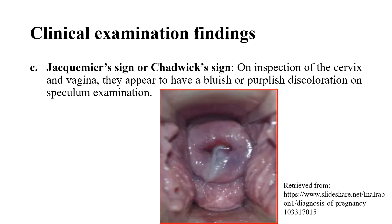On speculum examination, we can examine the vagina and cervix. In this area, blood vessels increase and blood flow increases due to rising estrogen hormone levels during pregnancy. This congestion causes visible color changes.